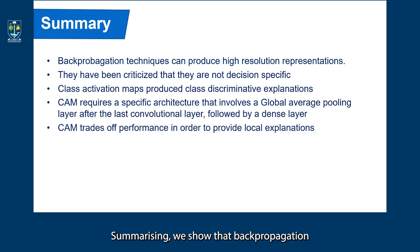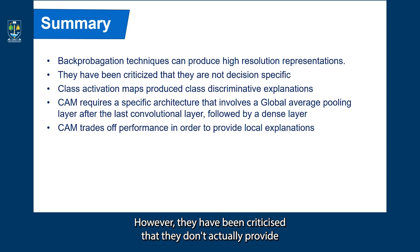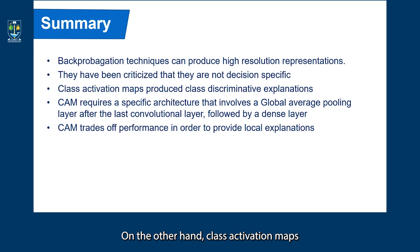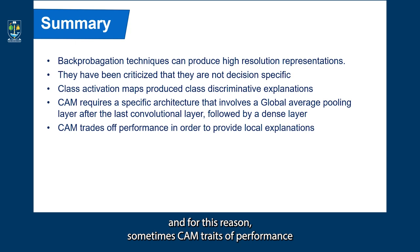Summarizing: backpropagation techniques can produce high resolution representations, however they have been criticized for not providing insight into the decision process of a deep neural network. On the other hand, class activation maps produce class discriminative explanations but require specific architectures, and for this reason sometimes come with trade-offs in performance in order to provide local explanations.